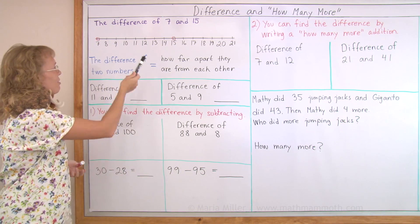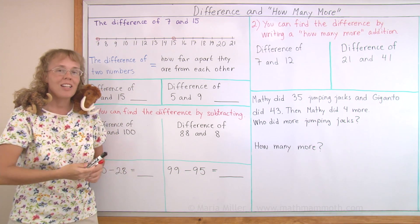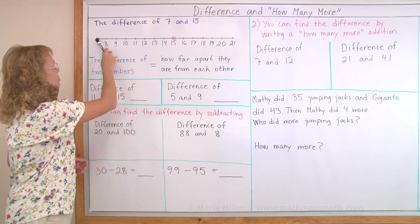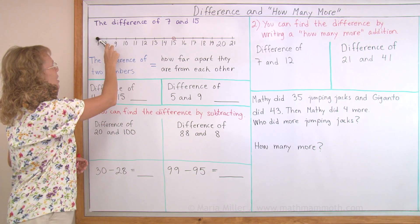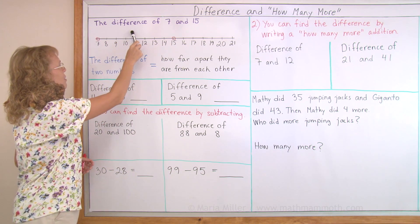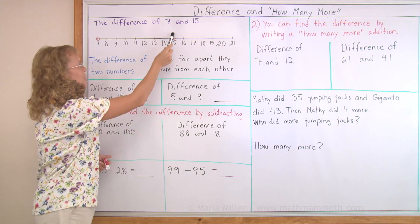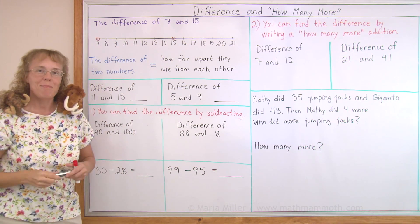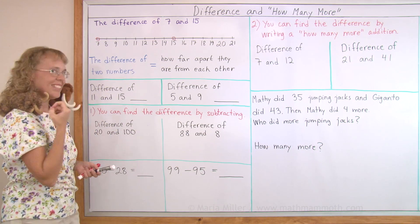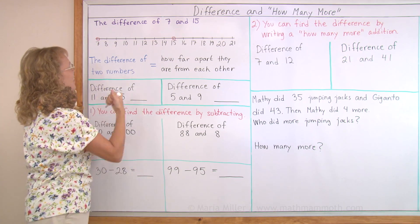So the difference of 7 and 15, I can count on the number line how many steps there are to take from 7 to 15. If I'm here I go 1, 2, 3, 4, 5, 6, 7 and 8 steps. Or I could travel from 15 to 7 and find the same, 8 steps. The difference is 8.